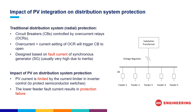In the diagram, we can see that the traditional radial distribution systems are protected by circuit breakers controlled with overcurrent relays. When an overcurrent measured by the relay exceeds the current setting, it will trigger the circuit breaker to open and isolate the fault. It is noted that these settings are designed based on the fault current of synchronous generators. These currents are usually very high due to the inertia of the synchronous generator and can be easily detected by the overcurrent relay.